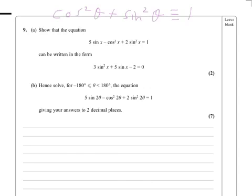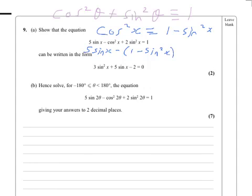In this case we need to eliminate any reference to cosine, so I'm going to rearrange that to make cosine the subject. Cosine squared x is always 1 minus sine squared x. Substituting that in here we get 5 sine x minus cosine squared x plus 2 sine squared x equals 1.